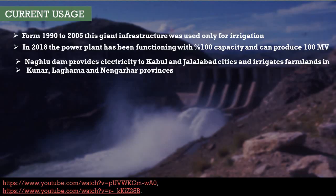Now the dam is used for irrigation purposes as well as electricity production. But from 1990 to 2005, during the civil war, the dam was almost exclusively used for irrigation since the turbines were not activated due to low maintenance and services.